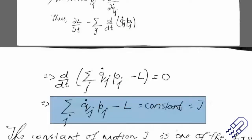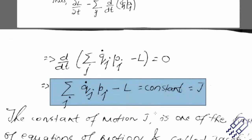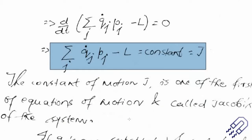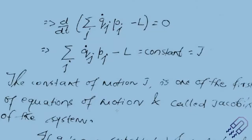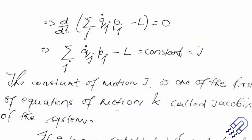This is called the Jacobi function or Jacobi integral of the system. It is also a first-order equation of motion and is called a first integral. It involves L equals T minus V, incorporating kinetic and potential energy, so it describes the whole system. When we substitute all the q_j's, this Jacobi integral represents nothing but the Hamiltonian. So this is Hamilton's equation — a wonderful result.